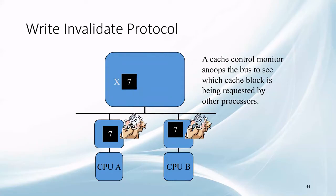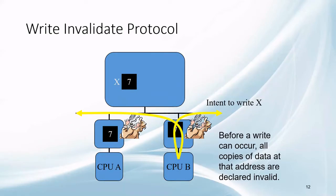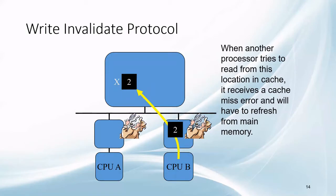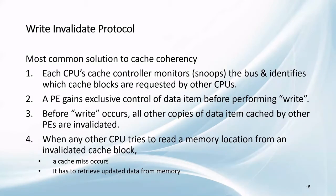As a solution, we will see what a write-invalidate protocol is. When some processor wants to write on a shared variable, all the copies of the variable are declared invalid. For this, a cache control monitor snoops the bus to see which cache block is requesting the variable by all other processors. There will be a cache miss if somebody tries to access it now, by which time the variable can be written by the processor that intended to write it. So, a write-invalidate protocol is a solution to the cache coherence problem in centralized multiprocessors.